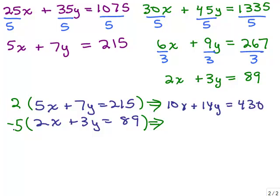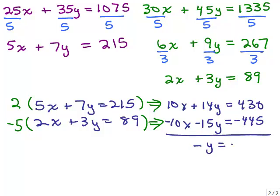Now I've got to multiply everything in the second equation by negative 5, that's negative 10X minus 15Y. I've got to do negative 5 times 89, which is 445, so it's going to be negative 445. It gives you negative Y equals negative 15, so Y is 15.